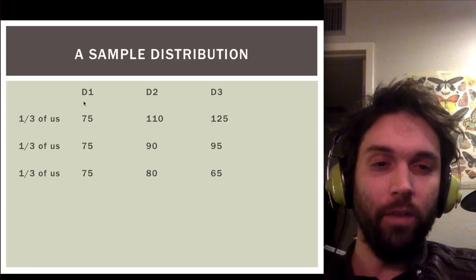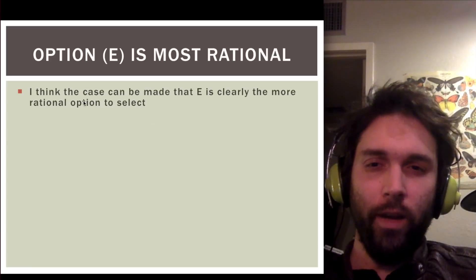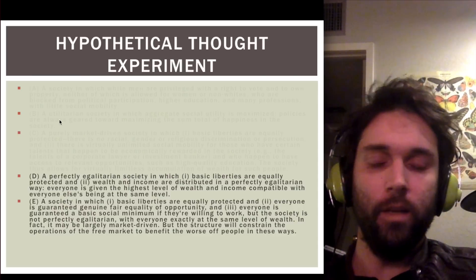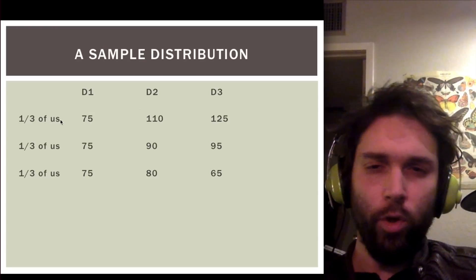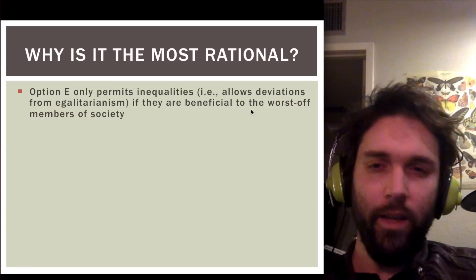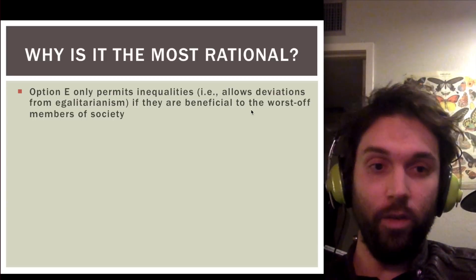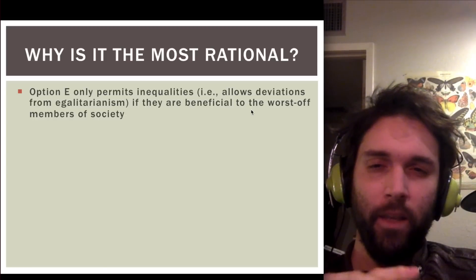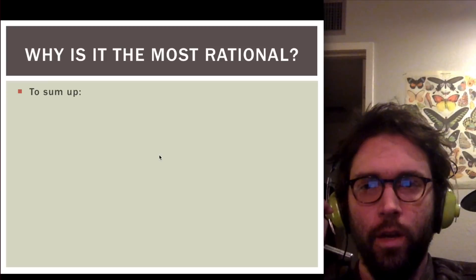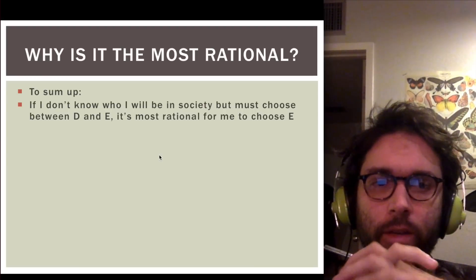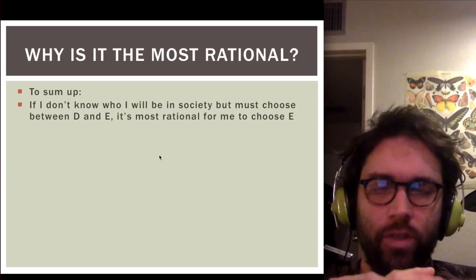Option E only permits inequalities, whereas option D calls for strict equality. But option E, although it permits inequalities, only does so if they're beneficial to the worst-off members of society. To sum up: if I don't know who I'm going to end up being in some society I'm planning to enter through this hypothetical thought experiment, and I've got to choose between D and E, it's more rational for me to choose E. Then I know that even as the worst-off member, I'll be as well off as possible under any alternative distributive principle.